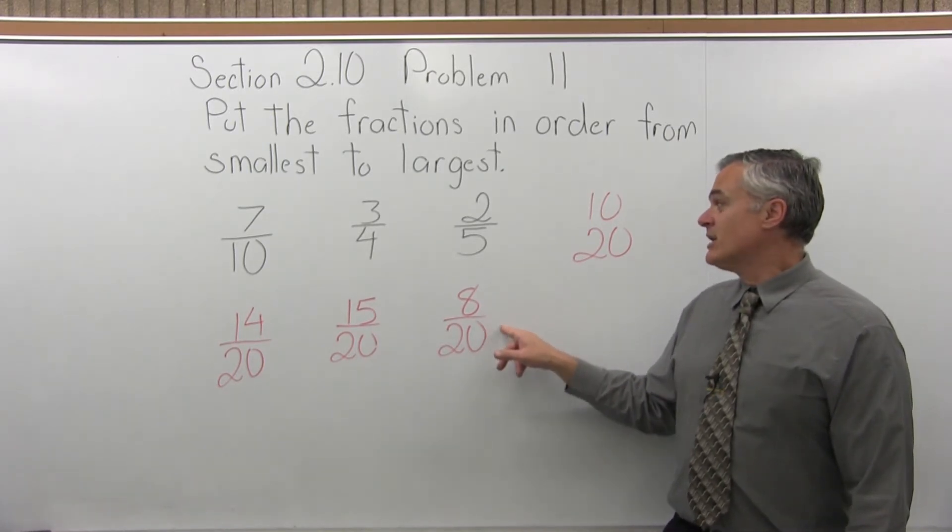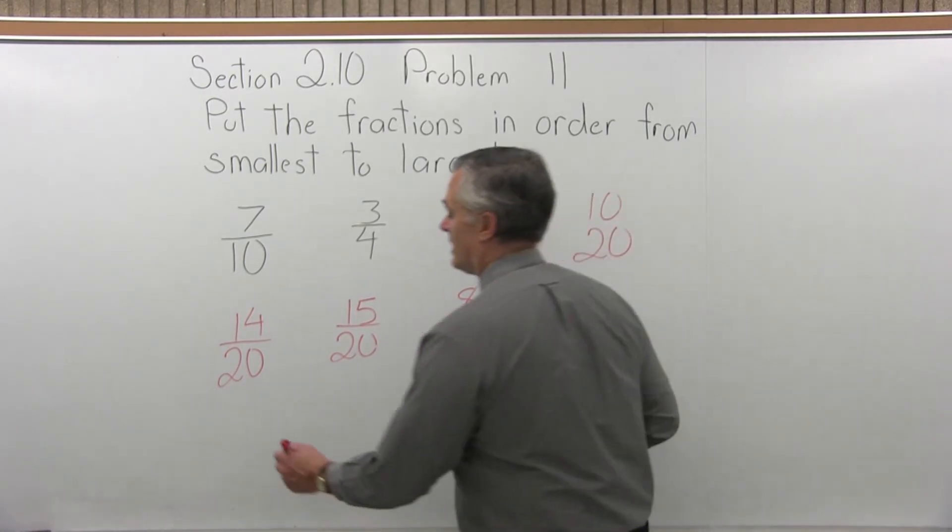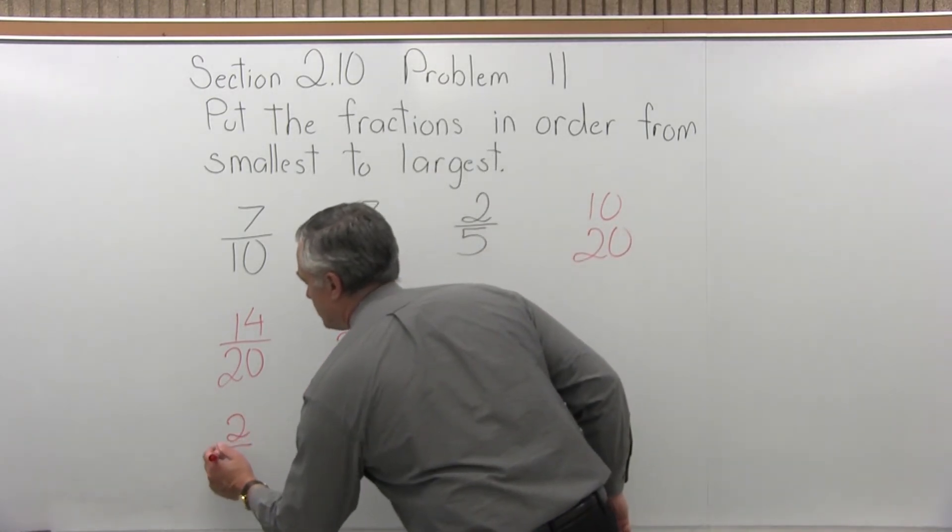That fraction of 8 over 20 came from 2 fifths. If I'm putting them in order from smallest to largest, the 2 fifths must be listed first.